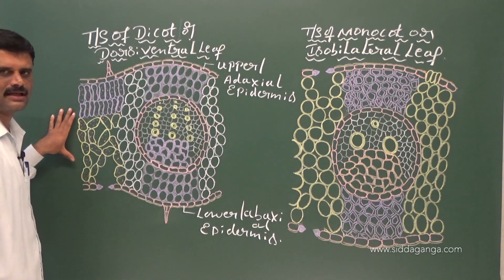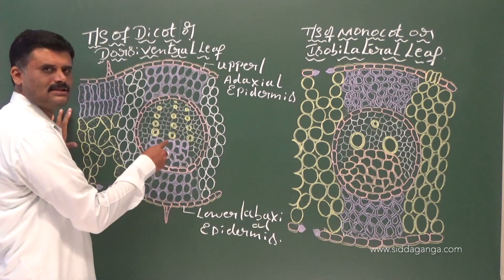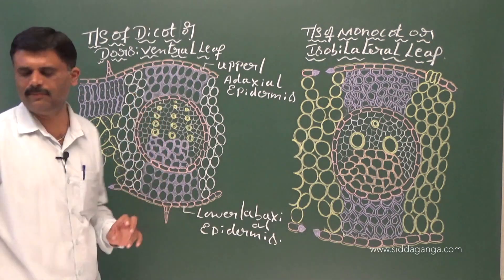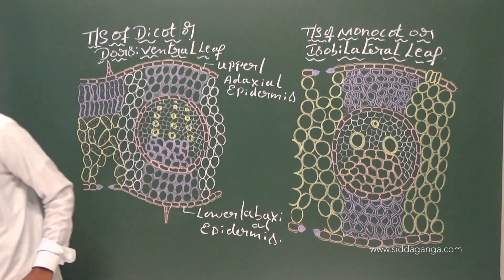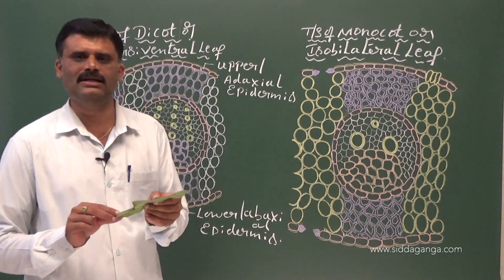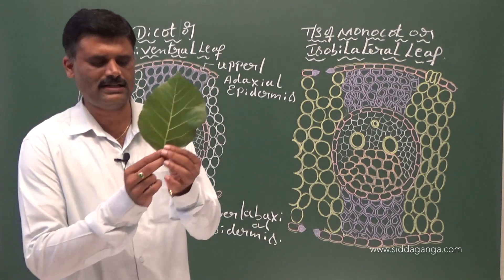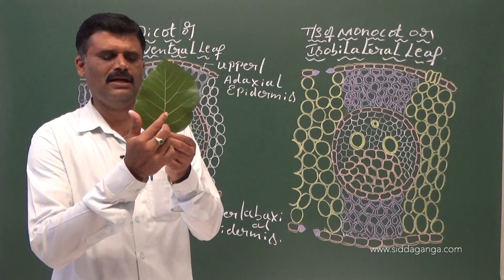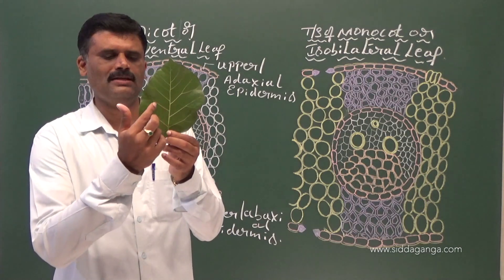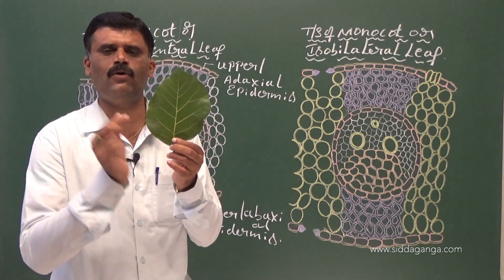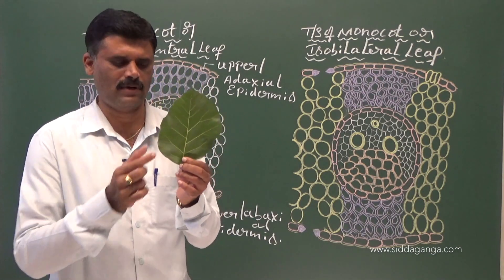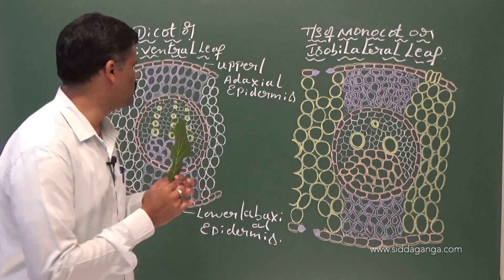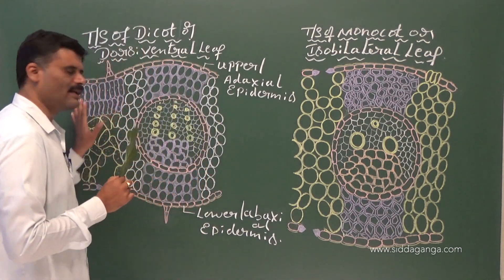Vascular bundles are found in the midrib region and in the veins and veinlet regions. This is the midrib. These are the veins and veinlets; in midrib, veins, and veinlets we can find the vascular bundle. In between the veins there is the mesophyll region.